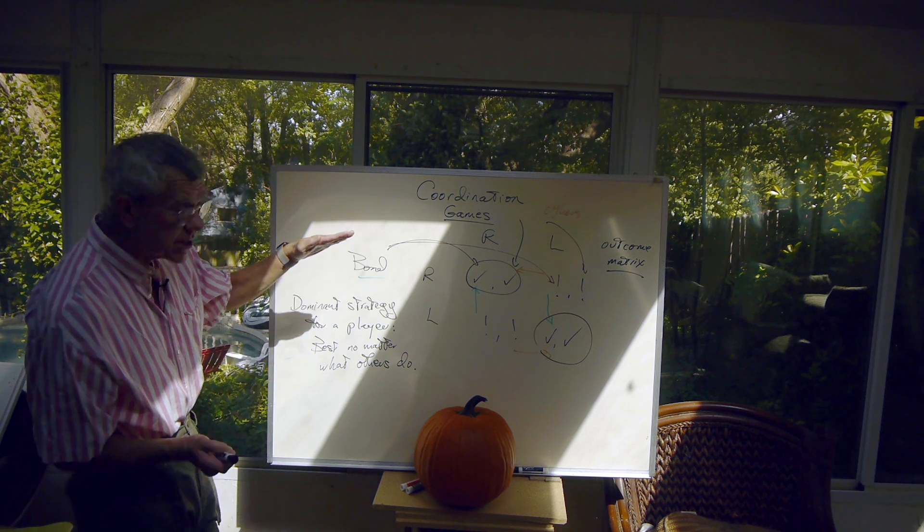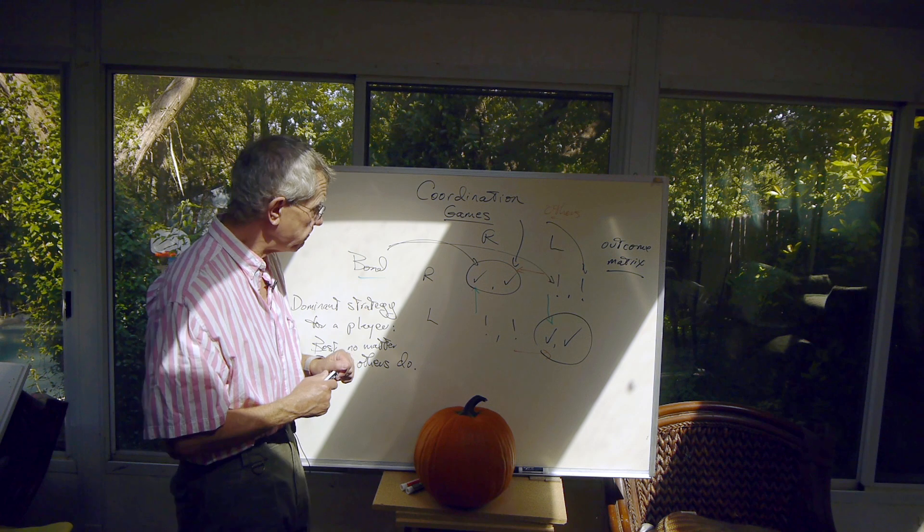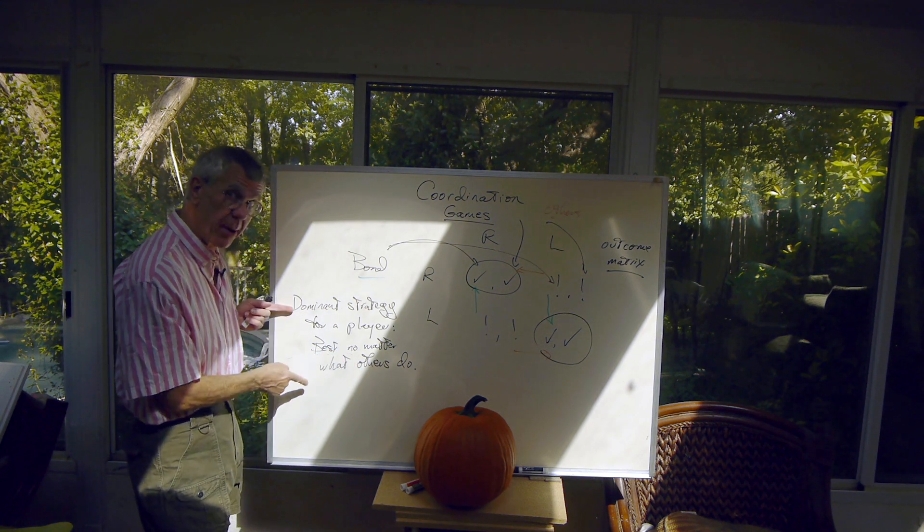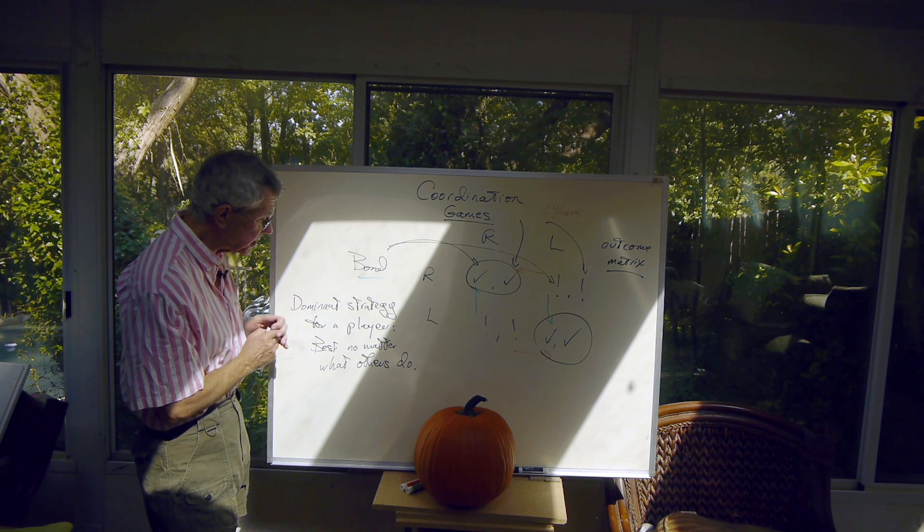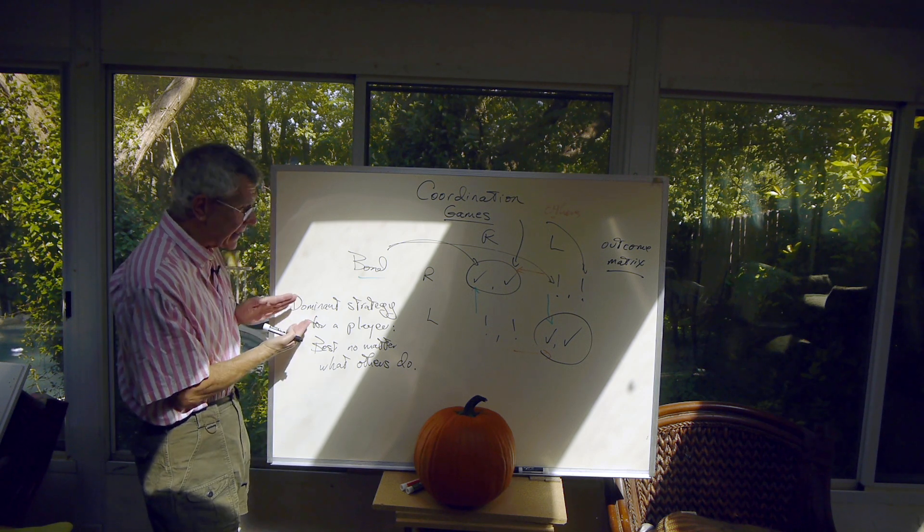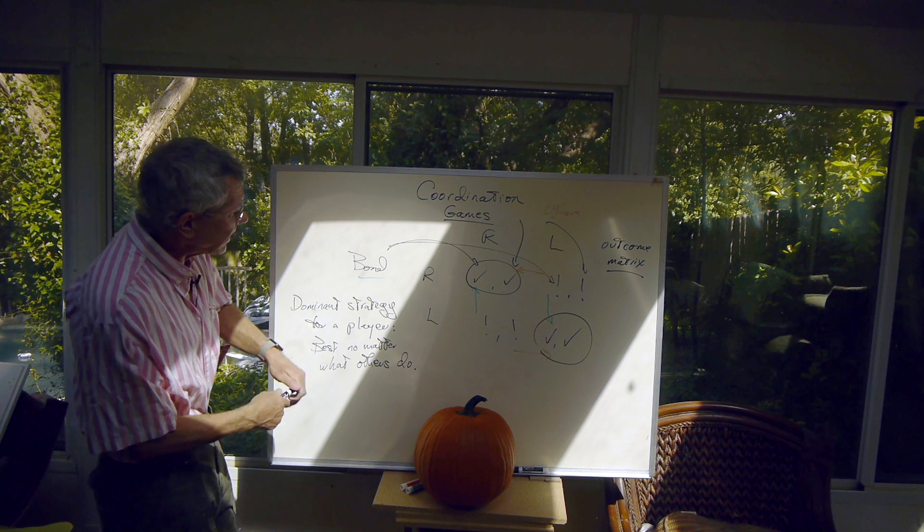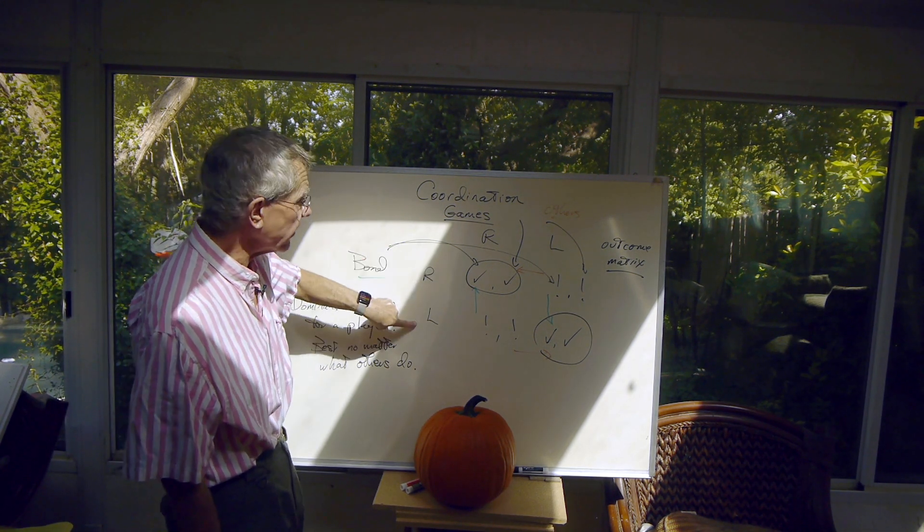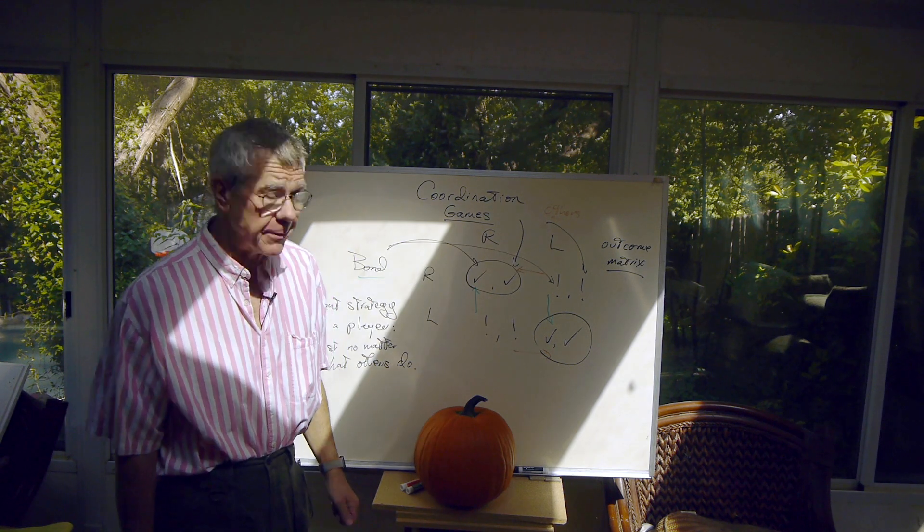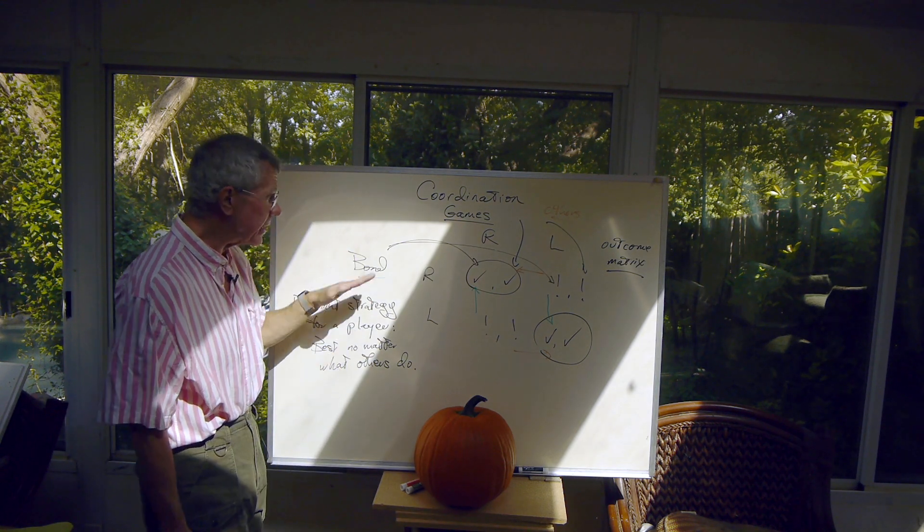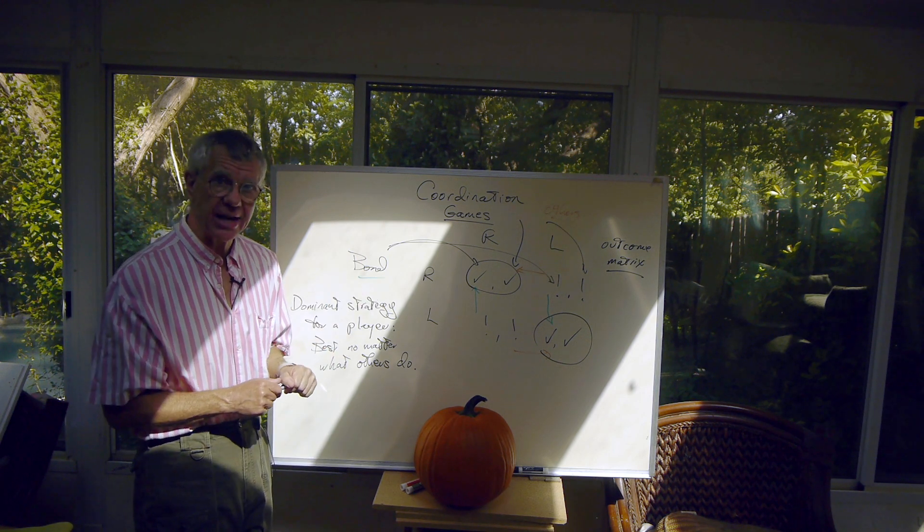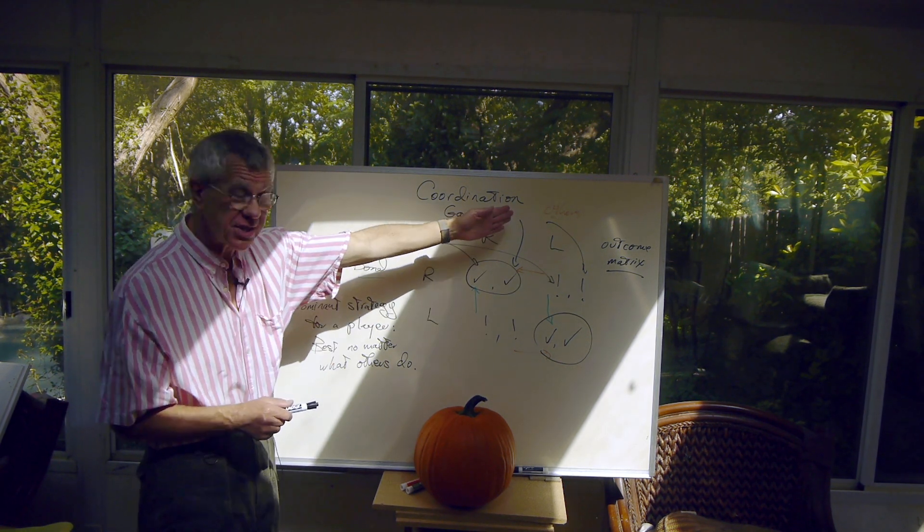In this case, Bond does not have a dominant strategy. By the way, a strategy that is dominant is said to dominate the other possible choices, and those choices are dominated by this strategy. Well, in this case, there is no dominant strategy. Whether Bond should drive on the right or on the left depends on what other people are doing. There is no choice that's best for him, no matter what others do. So in this game, there is no dominant strategy for either player, because it's the same for the others.